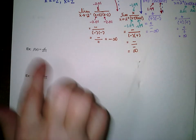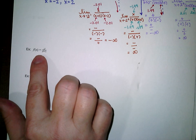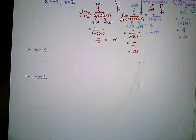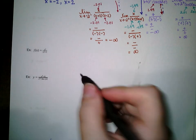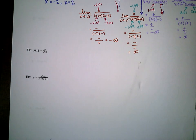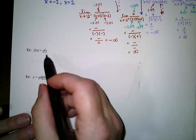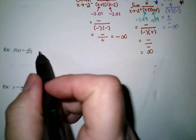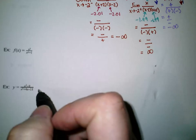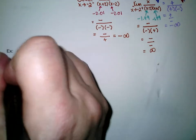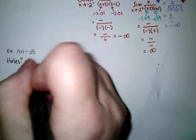Let's get to this next example: f of x equals x squared over x squared plus 1. We're looking for vertical asymptotes and holes. For holes, we start by factoring the numerator and denominator and see if anything cancels. This x squared plus 1 doesn't factor over the real numbers — it looks like difference of squares, but it's sum of squares. So it won't factor, nothing cancels, and there will be no holes.